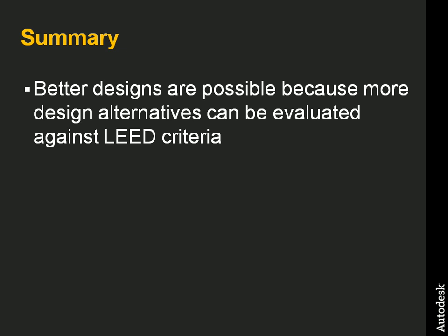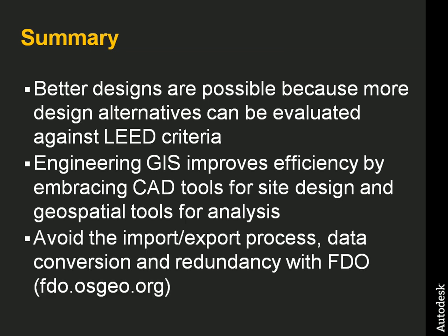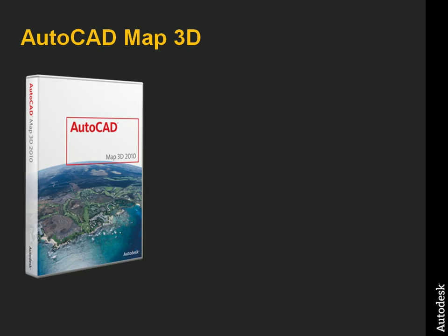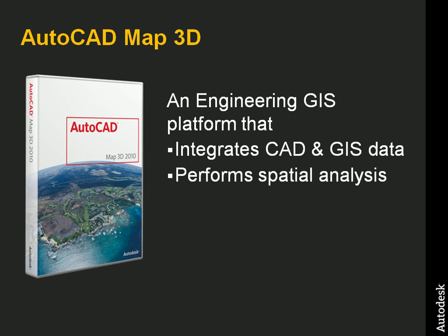In summary, better designs are possible because more design alternatives can be evaluated against LEED criteria. We also used engineering GIS to help improve the efficiency of our work. We were able to embrace CAD tools for site design and geospatial tools for analysis all in one software platform. Finally, we used Feature Data Object technology, FDO, to avoid the import-export process, data conversion, and data redundancy by simply connecting to the data. We used AutoCAD Map 3D, an engineering GIS platform that integrates CAD and GIS data and can perform spatial analysis.